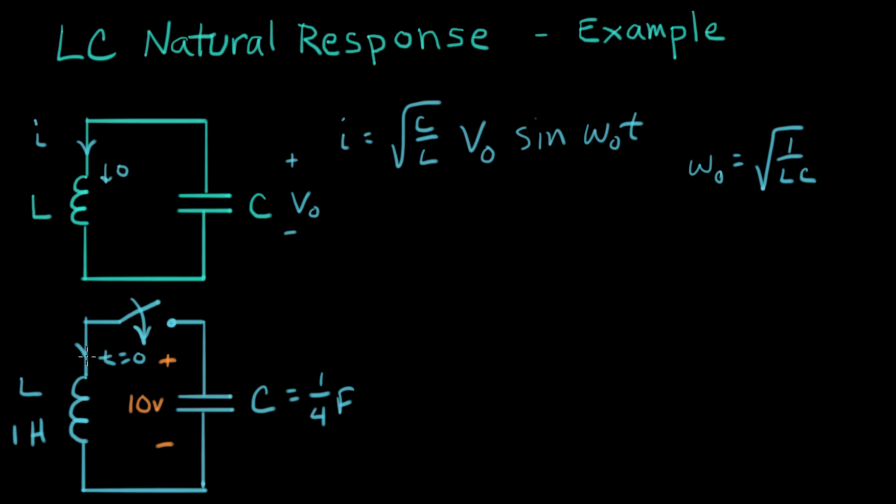And what we want to find is, what is I of T? We have L, we have C, we have a starting voltage, and so now we have everything we need to work out the current. Let's do that. So first off, we'll do omega-naught.